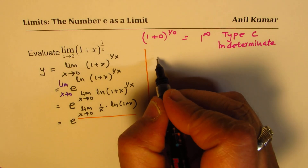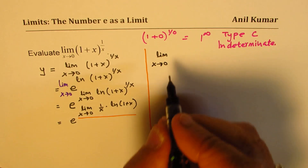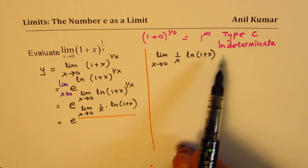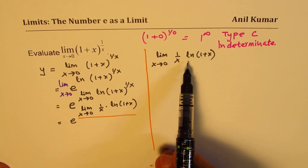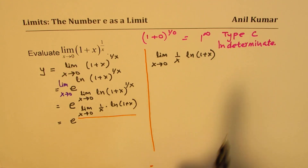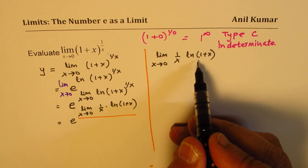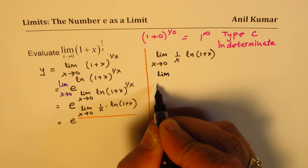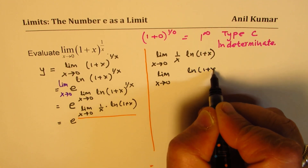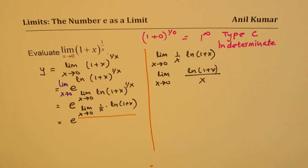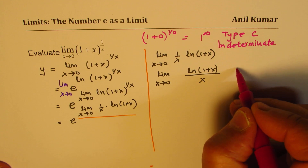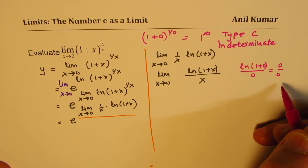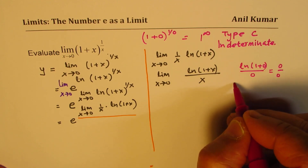We need to calculate the limit when x approaches 0 of (1 over x) times ln(1 plus x). In this type C indeterminate, we write it in the form 0 over 0 or infinity over infinity to apply L'Hôpital's rule. We write it as a rational expression: limit x approaches 0 of ln(1 plus x) over x. Substituting 0 gives ln(1) over 0, which is 0 over 0, so we can apply L'Hôpital's rule.